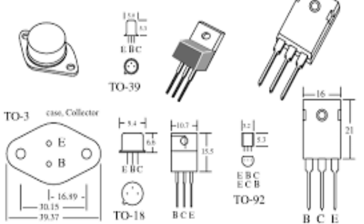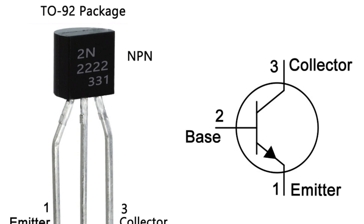Voltage Regulators — the transistor can regulate voltage levels in power supplies, such as in linear voltage regulators. Digital Logic — it can be used in digital logic circuits as a switch or to amplify signals, such as in AND or OR gates. Oscillators — it can be used in oscillator circuits, such as simple relaxation oscillators or phase shift oscillators. Electronic Toys and Gadgets — it can be used in various electronic toys, audio amplifiers, LED flashers, and simple robots. Overall, the 2N2222 is a versatile and widely used component, and its applications are limited only by the imagination of the designer.